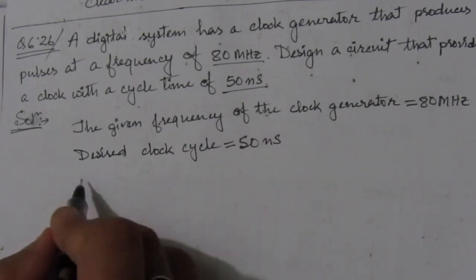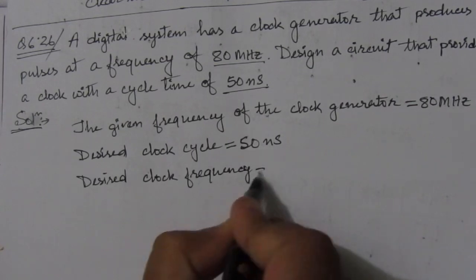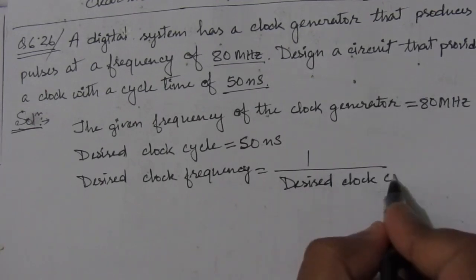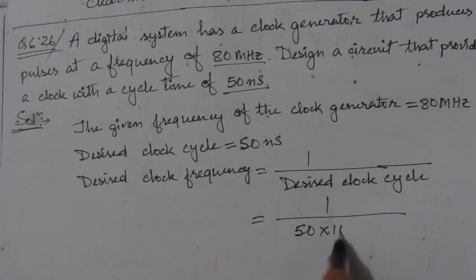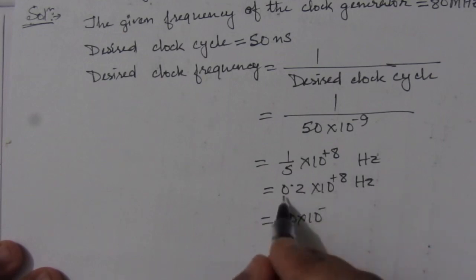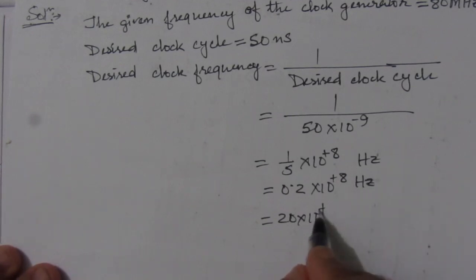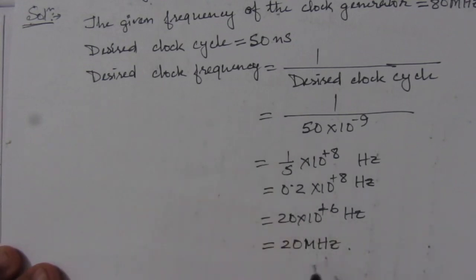The desired clock frequency is 1 divided by the desired clock cycle. Dividing 1 by 50 nanoseconds — nano means 10 to the power minus 9 — gives us 1 by 5 into 10 to the power plus 8 Hz. That equals 0.2 into 10 to the power 8 Hz, which is 20 into 10 to the power 6 Hz, or 20 MHz. So the desired clock frequency is 20 MHz.